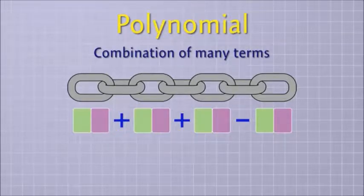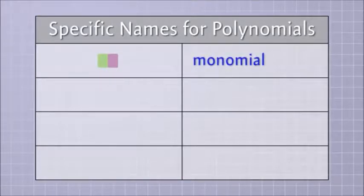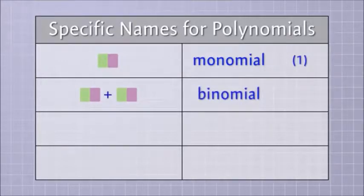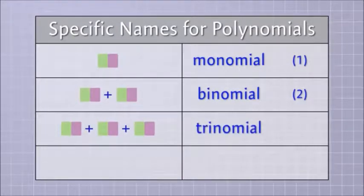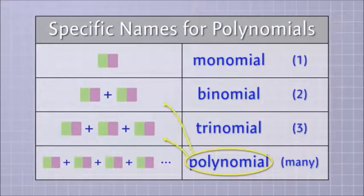And polynomials can be made from any number of terms joined together. But there are a few specific names that are used to describe polynomials with a certain number of terms. If there's only one term, which isn't really a chain, then we call it a monomial because the prefix mono means one. If there's just two terms, then we call it a binomial because the prefix bi means two. And if there's three terms, then we call it a trinomial since the prefix tri means three. Beyond three terms, we usually just say polynomial since poly means many. And in fact, it's common to simply use the term polynomial even when there are just two or three terms.